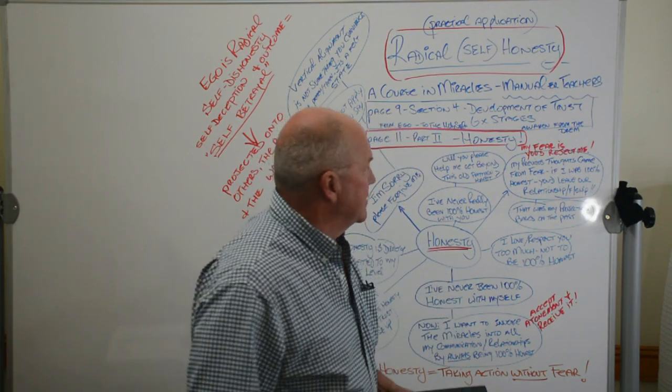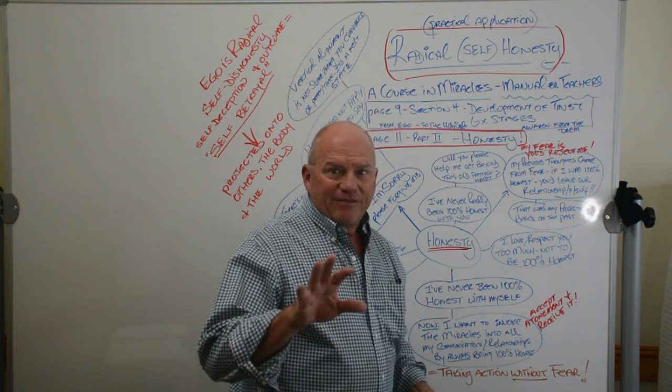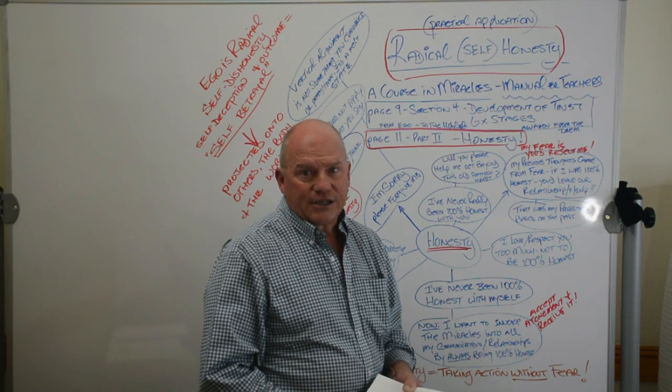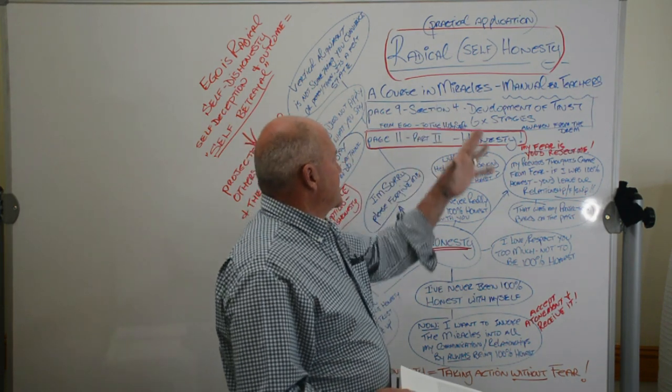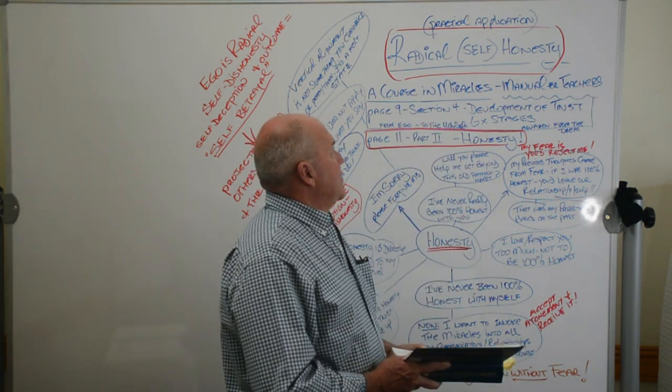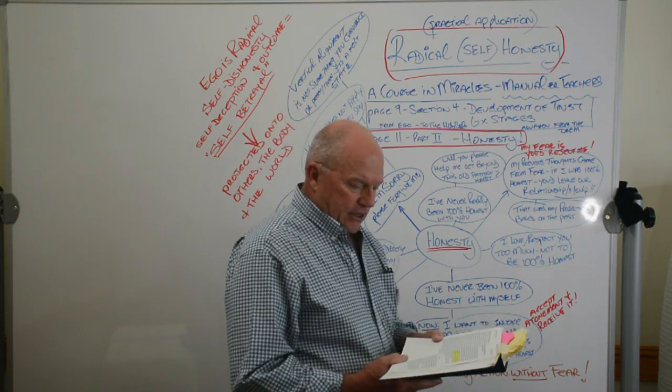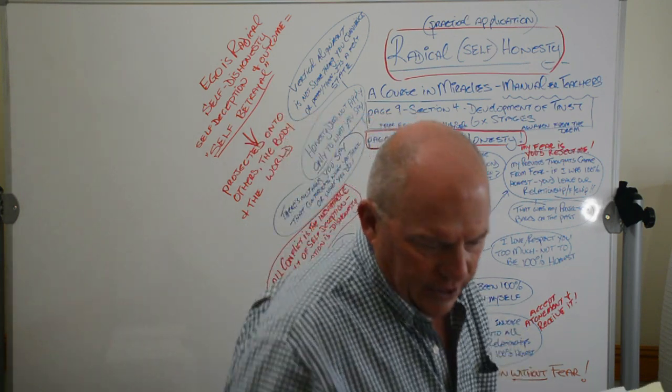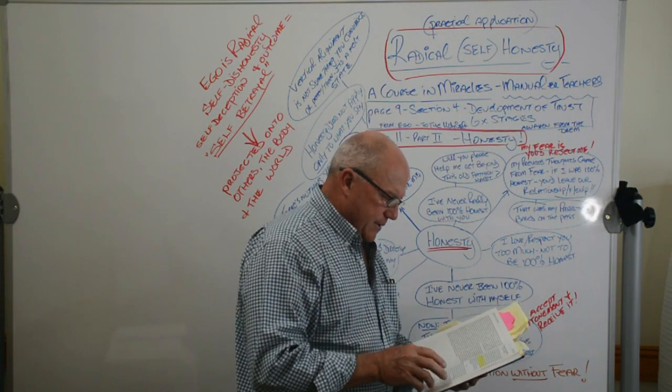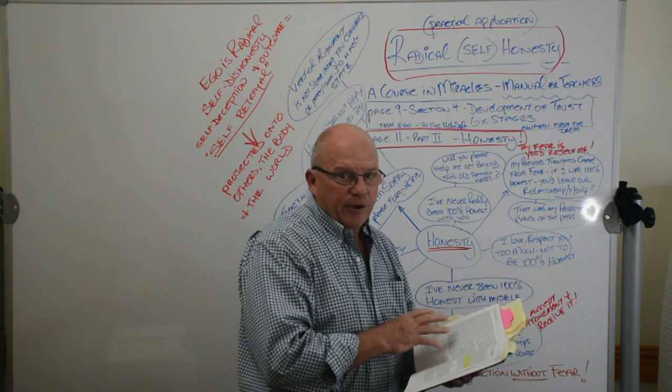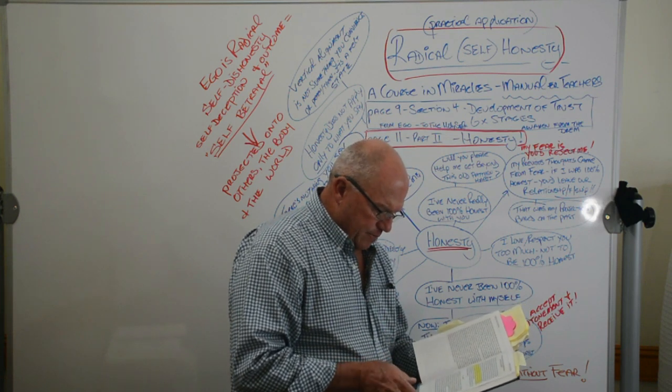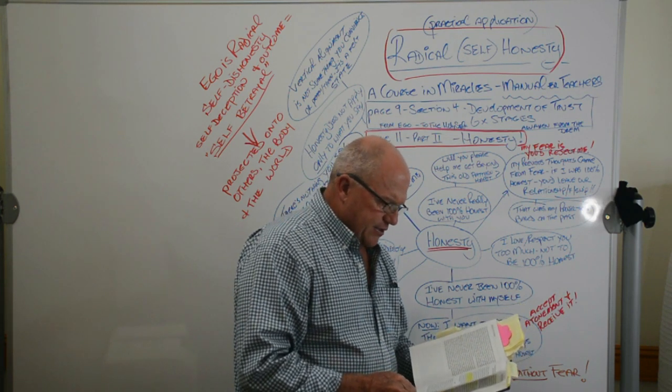Okay, here we go guys. Principle number five out of the seven key principles, and this one is radical self-honesty. This is summarizing some practical applications around radical self-honesty, and I'd like to start this particular section off by sharing a couple of things that are really relevant. In the back of the FIP version of Course in Miracles, in the manual for teachers on page nine, section four.